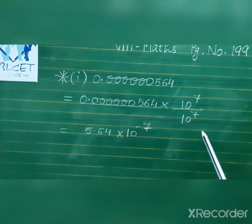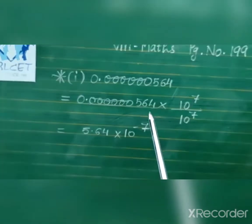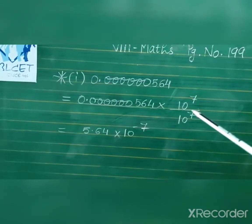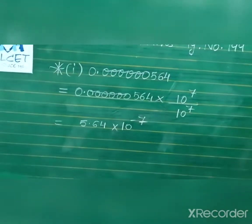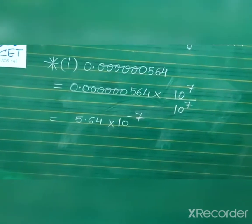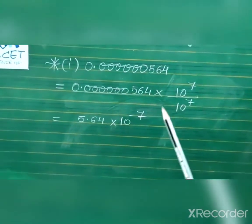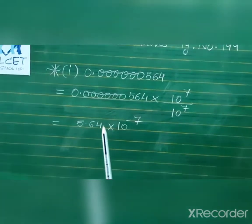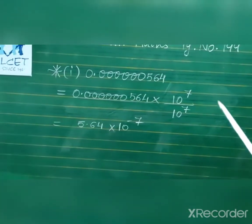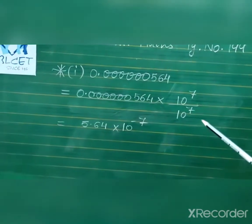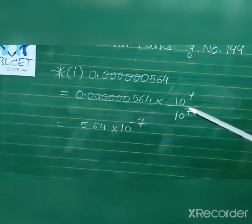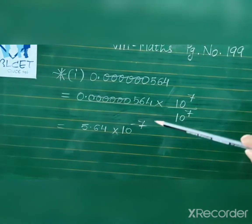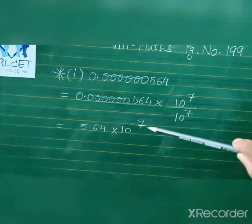We multiply and divide by 10 to the power 7. So the decimal moves to the right-hand side, and after one digit you can see two digits after the decimal. When we send the exponent form to the numerator, if it was positive it will take the negative form.